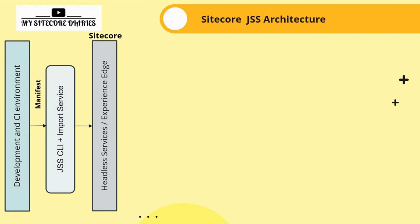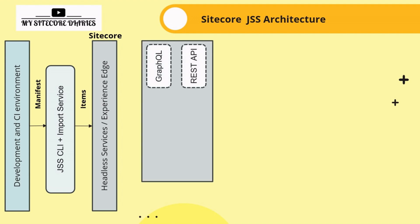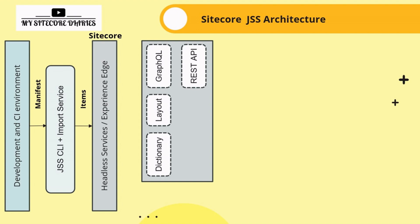Within Sitecore, several key services come into play. The headless services experience is the backbone of content delivery. Through this, we have access to REST API and GraphQL, which allow developers to retrieve content and layout information in JSON format, making it easier to work with modern JavaScript frameworks. The layout and dictionary service provides multilingual support, while layout and site item data define the structure and content of the page.